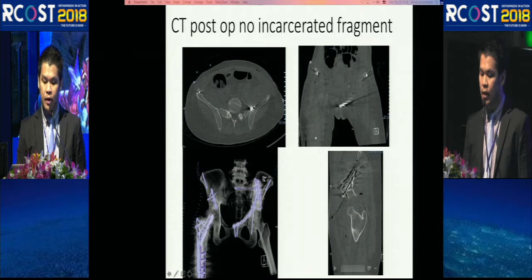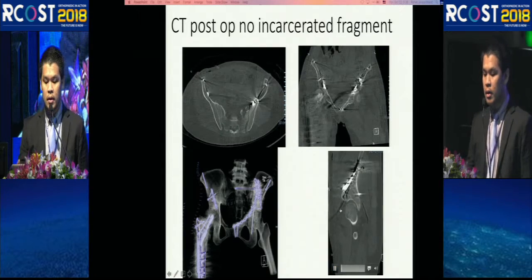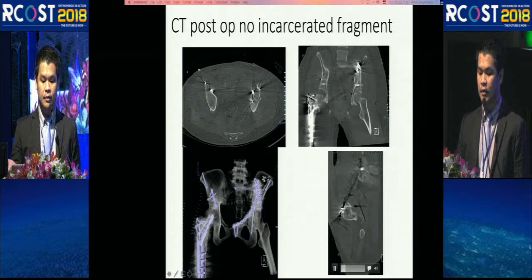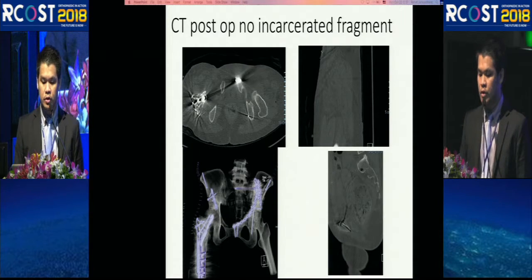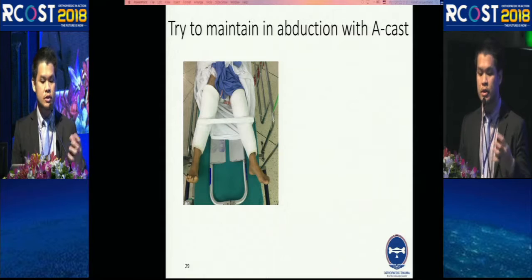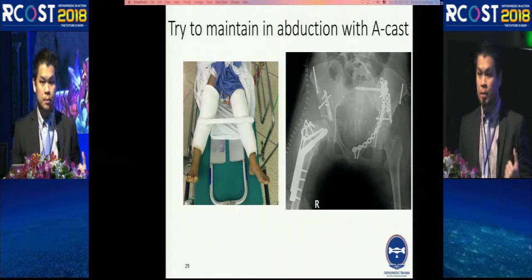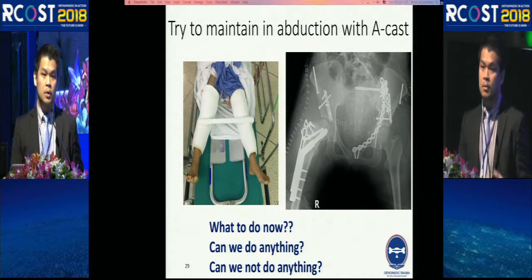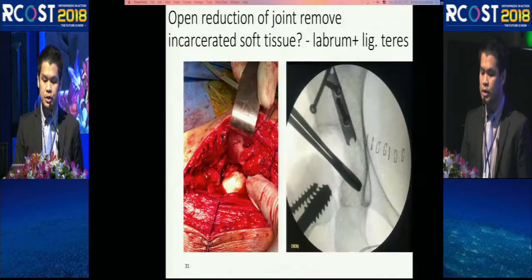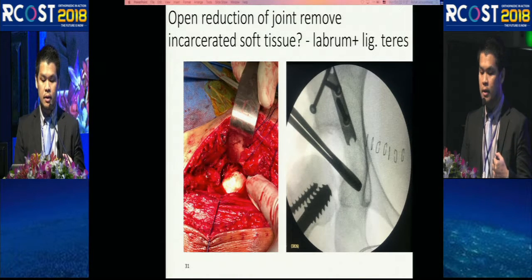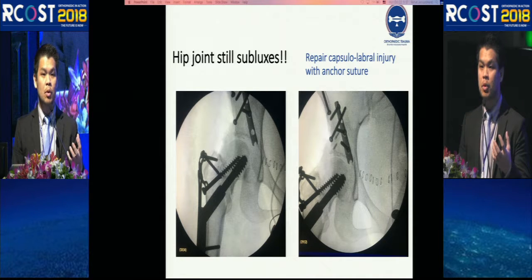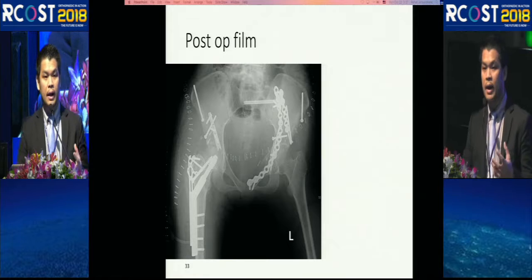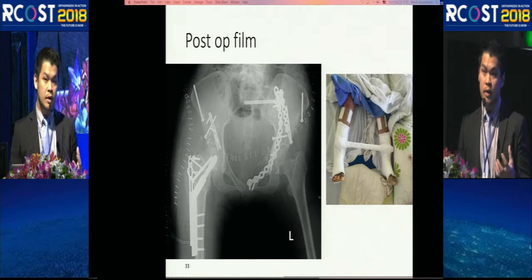I did a CT scan and there was no incarcerated fragment. I wasn't sure what to do next. Thinking it might be instability — with no incarcerated material — I tried abduction and maintenance with a cast brace, but the hip was still subluxed. Based on my experience and the literature, joint subluxation means early failure for sure, so I decided on another operation. I opened to clean all soft tissue inside, but the joint was still subluxed. Finally, I repaired the capsulolabral complex using two anchor sutures, and then I could reduce the hip.